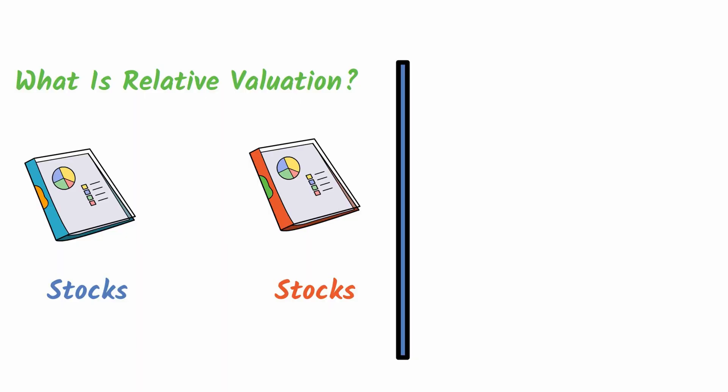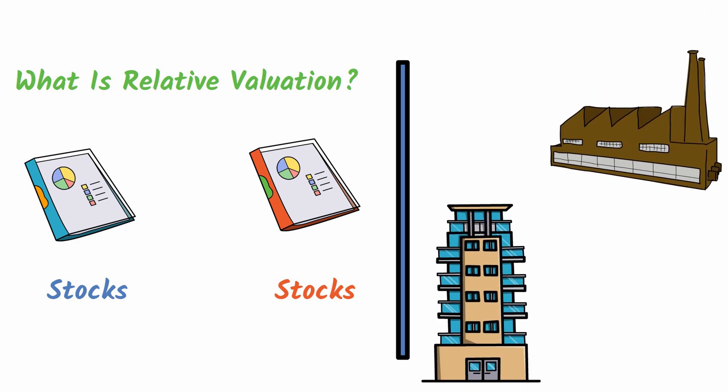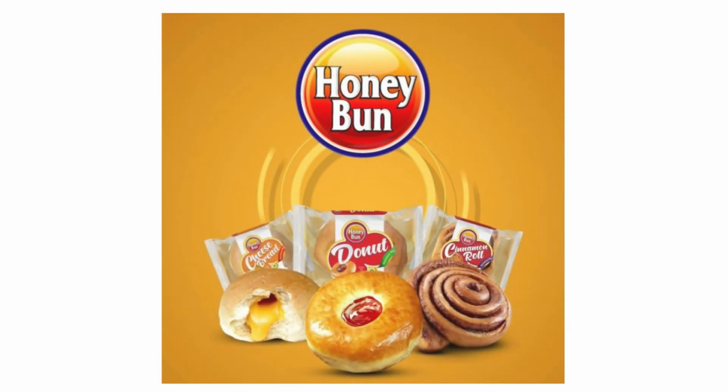Since we're valuing stocks, we're going to compare stocks within the same industry — for example, manufacturing or real estate are kept separate. I'm going to show you using two methods: PE and PB. We'll start with the PE first, then jump to the PB. For this example, we're going to use Honey Bun as the test subject.